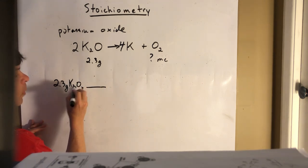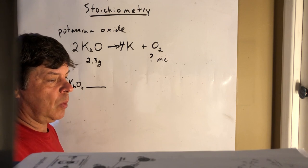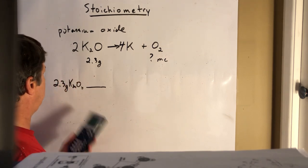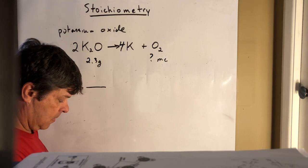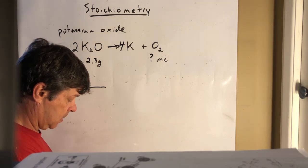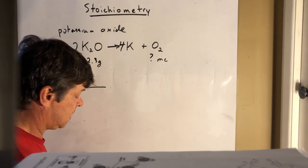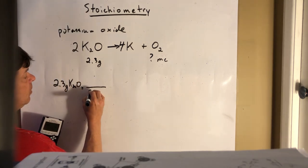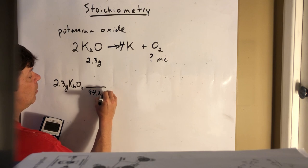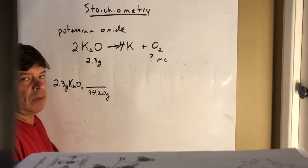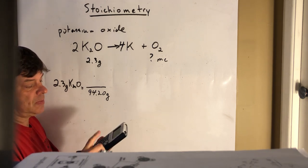You always want to convert what we're given to moles. So let's figure out, I think potassium is 39.1 times 2 plus 16, that's 94.2. So this is 94.2 grams. That just reminded me that I need to wear my glasses so I can see this screen. So that's one mole potassium oxide.